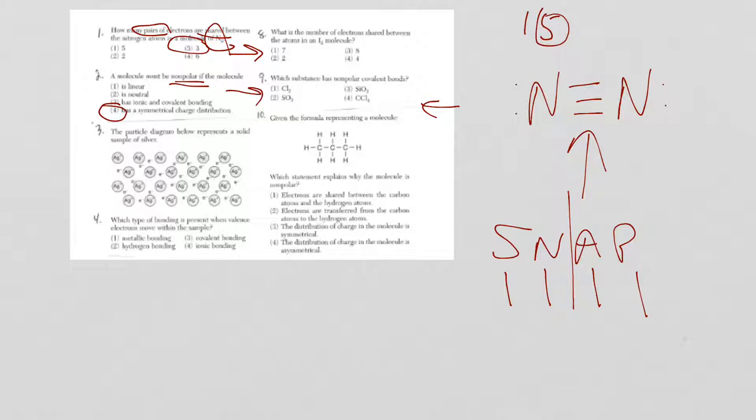So question eight, it's asking the number of electrons shared between atoms in I2. So iodine is part of group 17. All group 17 elements are known as the halogens. They all have seven valence electrons. When they bond with themselves, they share a pair of electrons. Right? So one pair, but the number of electrons shared is two.